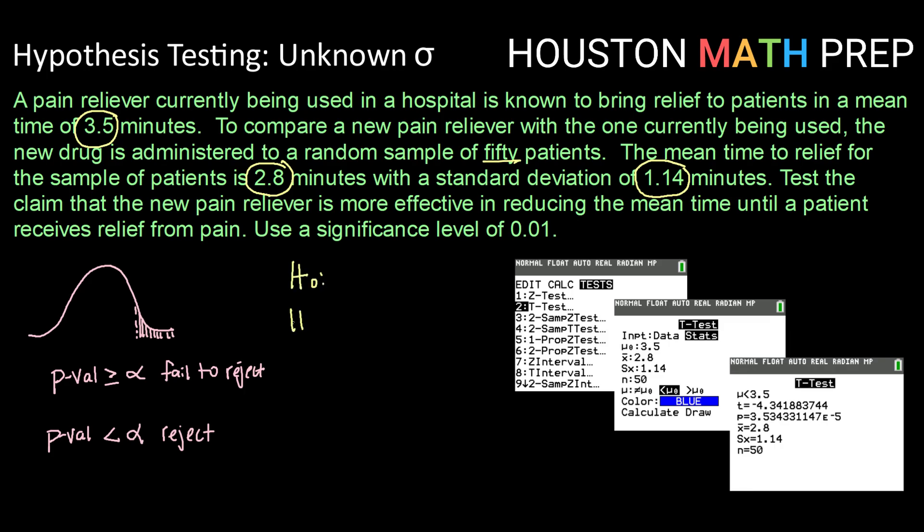So let's start by writing a pair of hypothesis statements. We'll start with our statement of equality. μ equals, we're always going to set that to our status quo or what's usual, so that would be 3.5. And if we're testing the claim that our new medicine is more effective in reducing the mean time, then we would say μ to be less than 3.5.